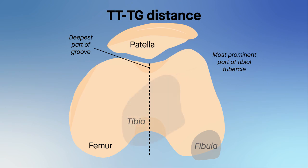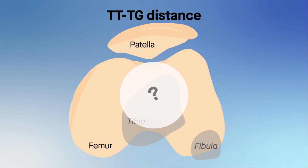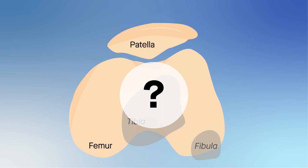A TT-TG distance of 20 millimeters or more is a common indicator that the tibial tubercle is too far lateral on the tibia, and thus grounds for corrective surgery. But a new study suggests there may be more than meets the eye, and that the TT-TG distance may not solely or even partially represent a lateral tibial tubercle.